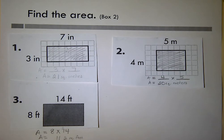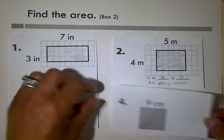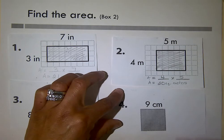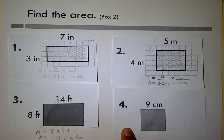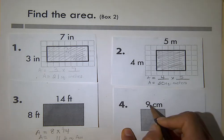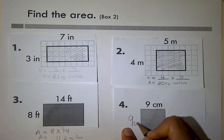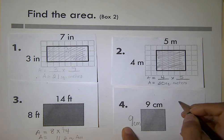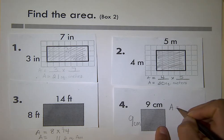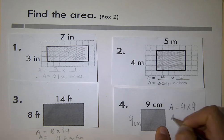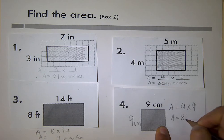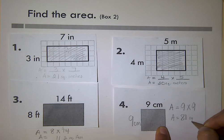Last one — let's find the area of this figure. It is a square, which means all sides are the same. So if this side is nine, the other side is also nine. Area equals nine times nine. Area equals 81 square centimeters.